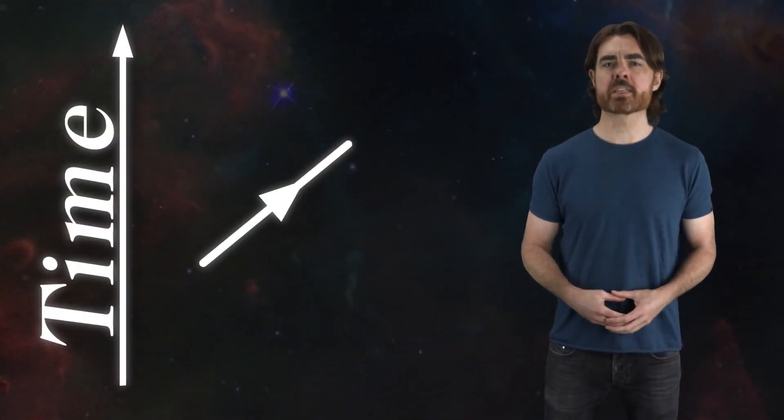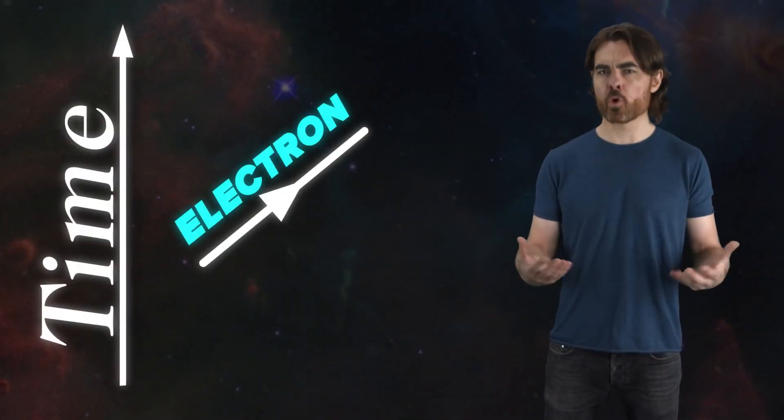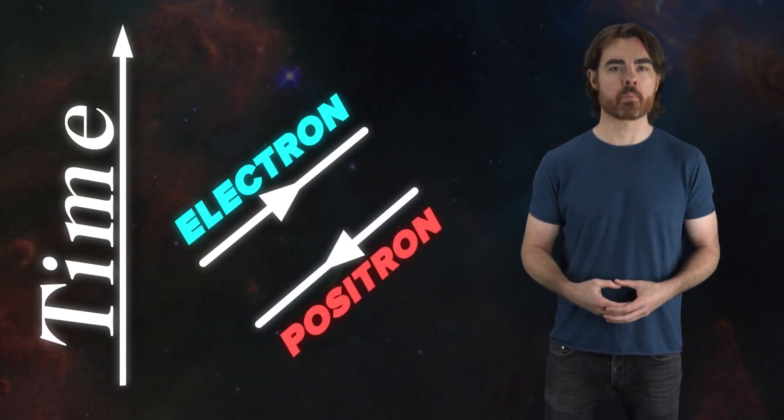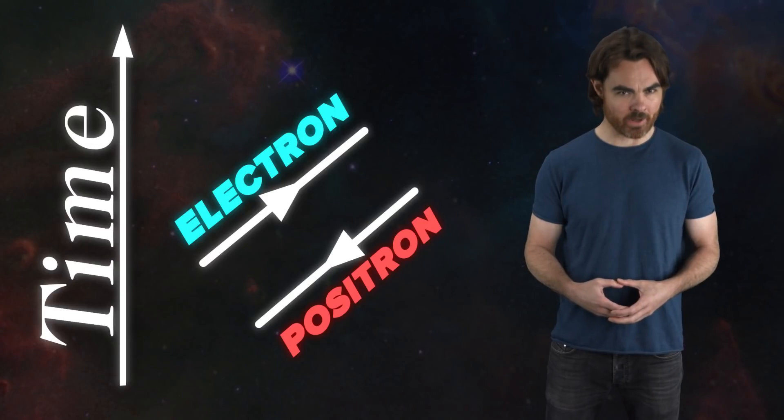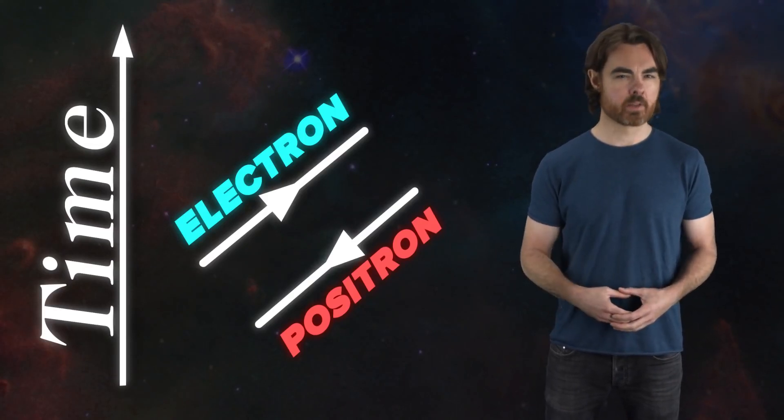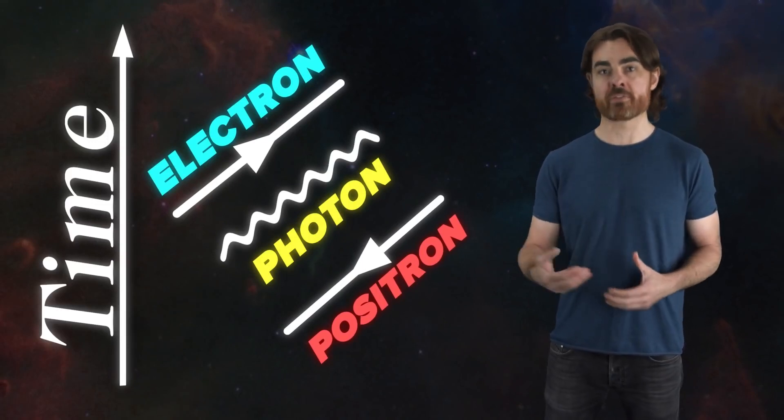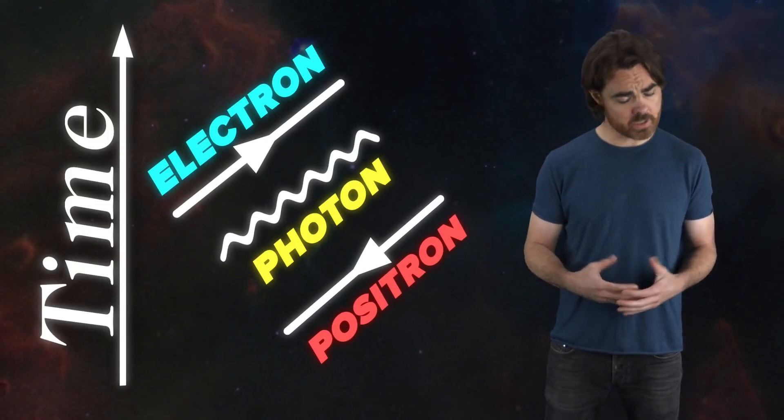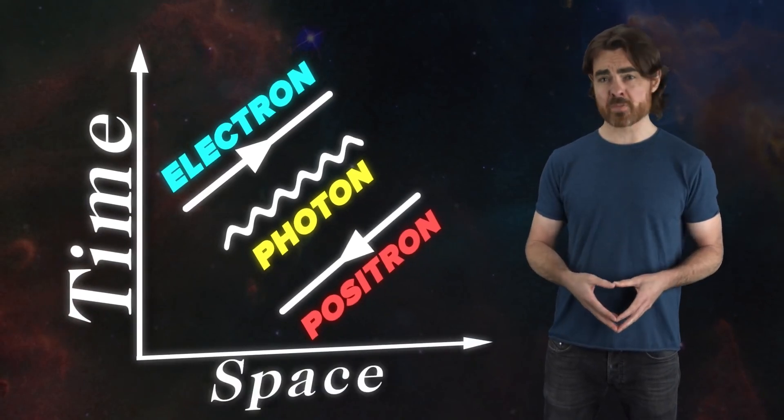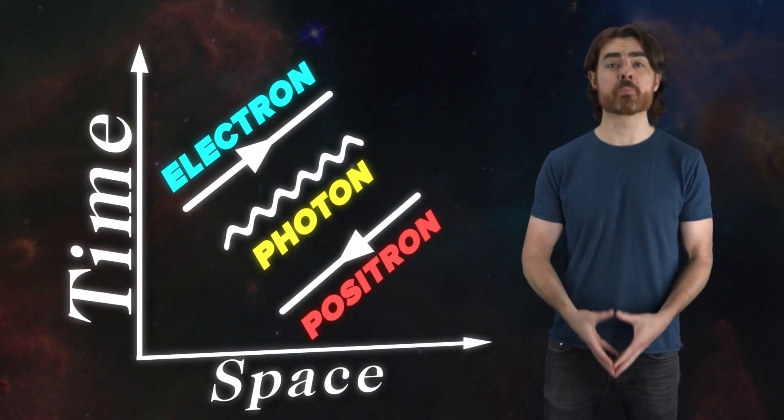In Feynman diagrams, we depict the electron as an arrow pointing forwards in time, while the positron is an arrow pointing backwards in time. We'll soon see the power of representing antimatter as time-reversed matter. The photon is shown as a wavy line. Time direction is irrelevant for the photon. Throw these on a plot of space versus time, and we have a Feynman diagram.